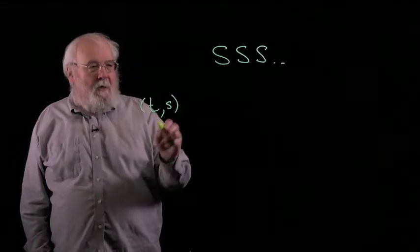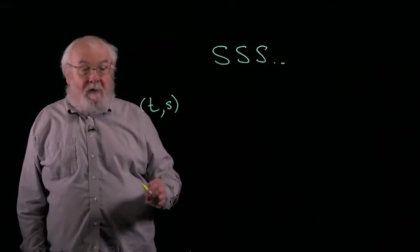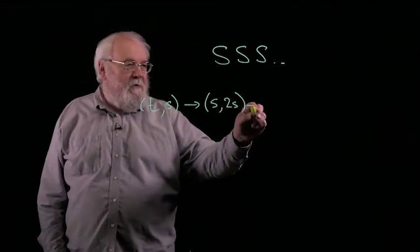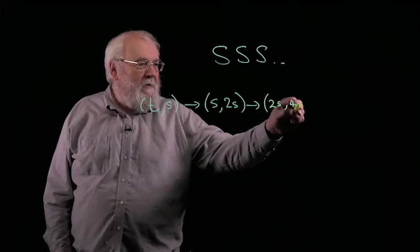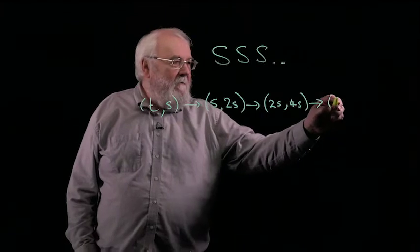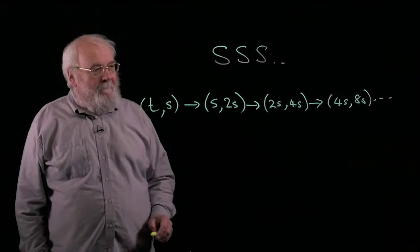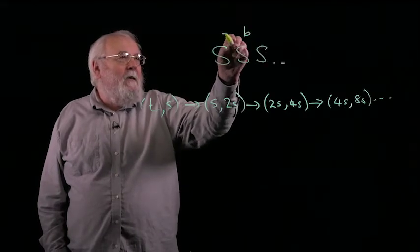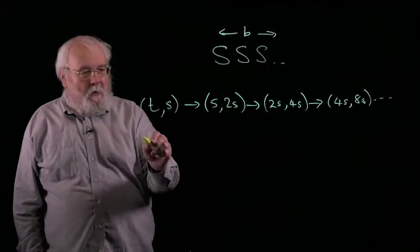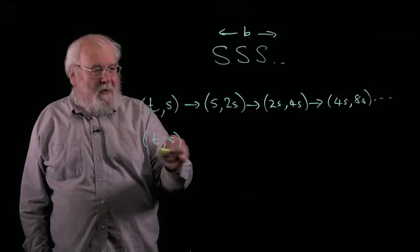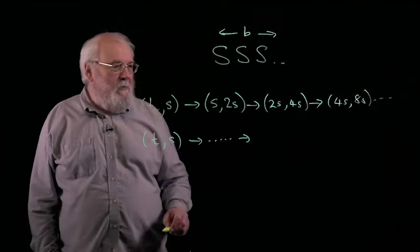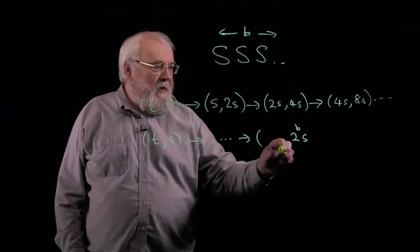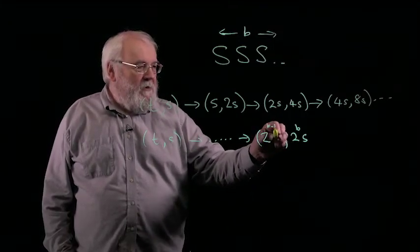If your current term is T and your current partial sum is little s, then that moves to s, 2s, and that moves to 2s, 4s, and that moves to 4s, 8s, and so on. This means that, let's fix the length of this. Supposing we have little b sum moves, what will happen is that T little s will, after the application of all those moves, be an ordered pair. The partial sum is going to be 2 to the b times little s, and the term will be half of that, so it'll be 2 to the power b minus 1 times little s.